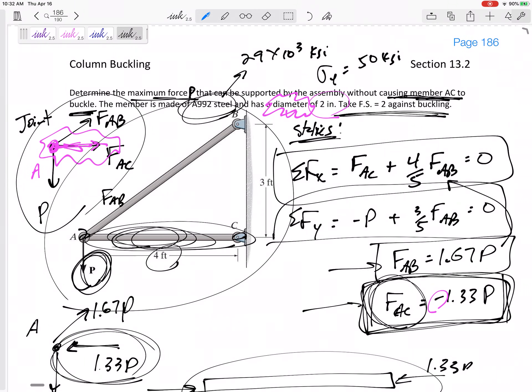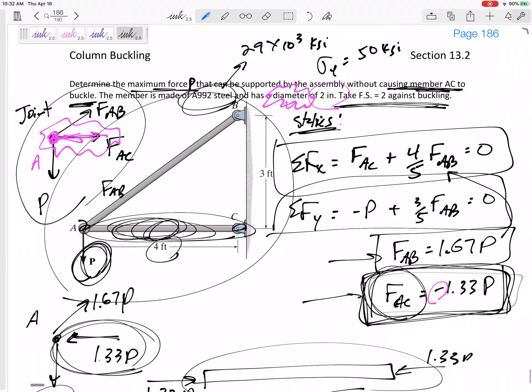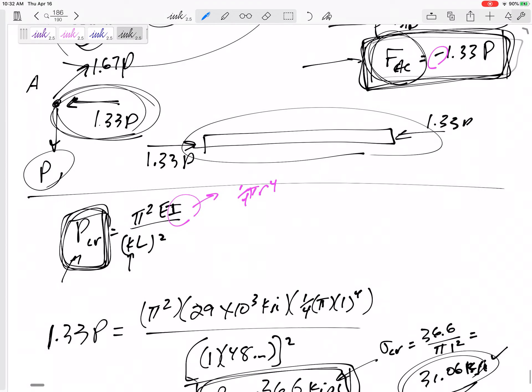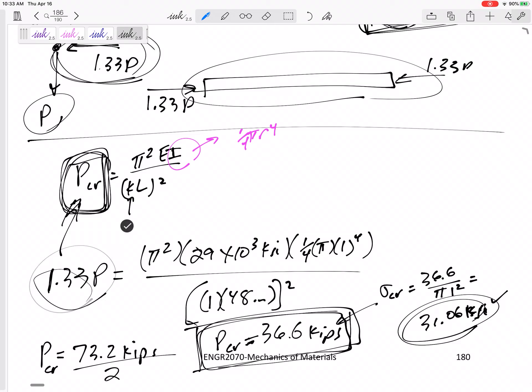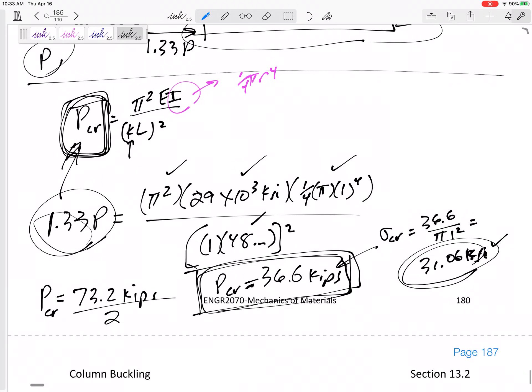This one I was looking for P, so I don't know P. So I solved as best I could with the force inside member AC, 1.33 P in compression. And so I plugged 1.33 P in right here for my axial force. I knew the pi, I knew the E, the material, the I, the shape, the length right there, the axial length, solve for this P right here. So this is the force P right here, 36.6. I'm only going to allow this to get up to 36.6 Kips.